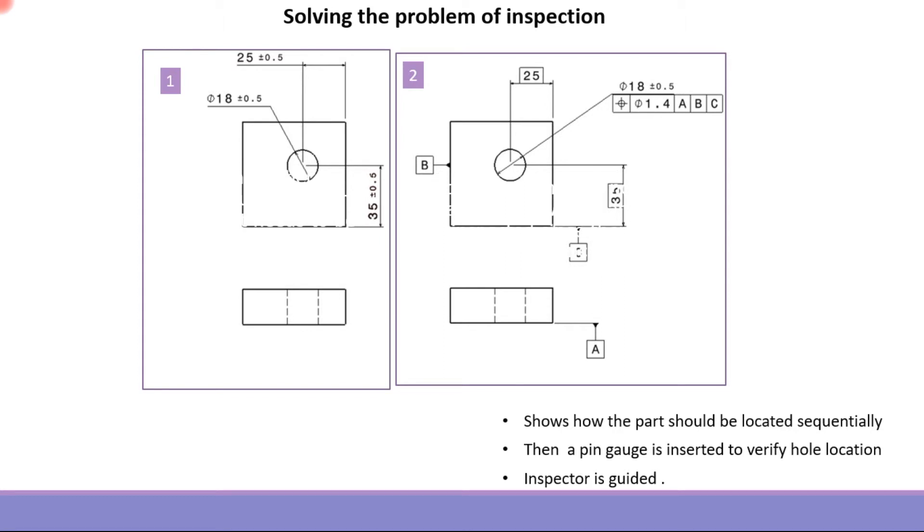But if we take the example of the first drawing, the traditional method, there is no specific guidance on how to inspect the part, how to locate the part, and the inspector may not constrain the degrees of freedom of the part, which will lead to errors in measurement and unreliable measurements.